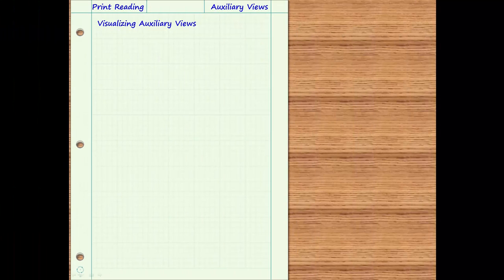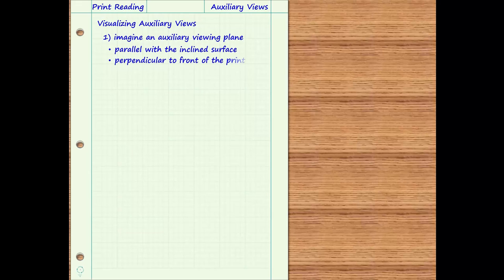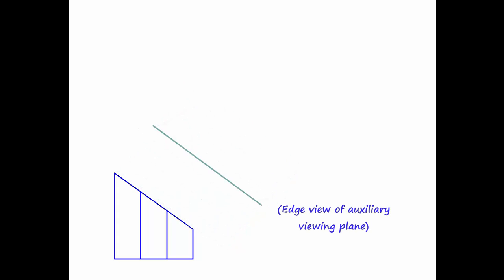To learn to visualize auxiliary views, imagine an auxiliary viewing plane. This plane should be oriented parallel to the inclined surface to be drawn and perpendicular to the frontal viewing plane. From this perspective, the print reader will be looking at the edge of the imaginary viewing plane, so it will look like a line.